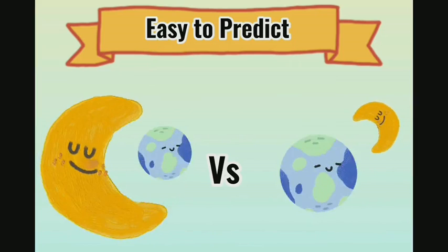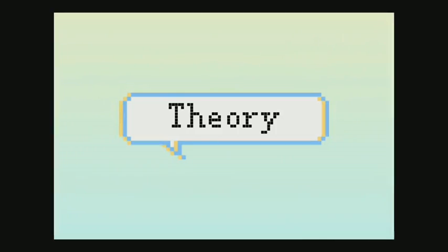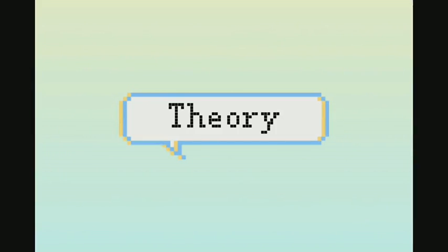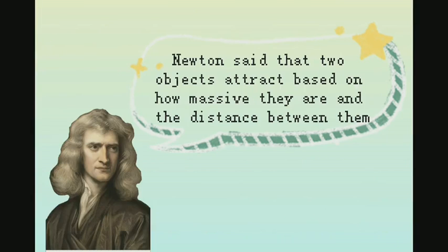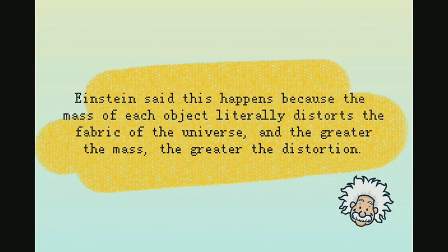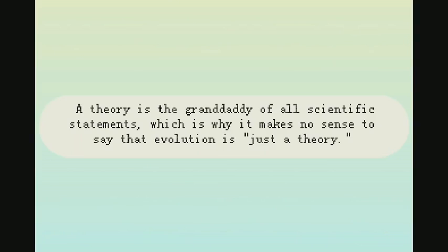So next we'll be discussing theory. A theory is an explanation of some aspect of the natural world that's well-substantiated by facts, tested by hypotheses and laws. Einstein's General Theory of Relativity is an example. Newton said that two objects attract based on how massive they are and the distance between them. Einstein said this happened because the mass of each object literally distorts the fabric of the universe — the greater the mass, the greater the distortion.